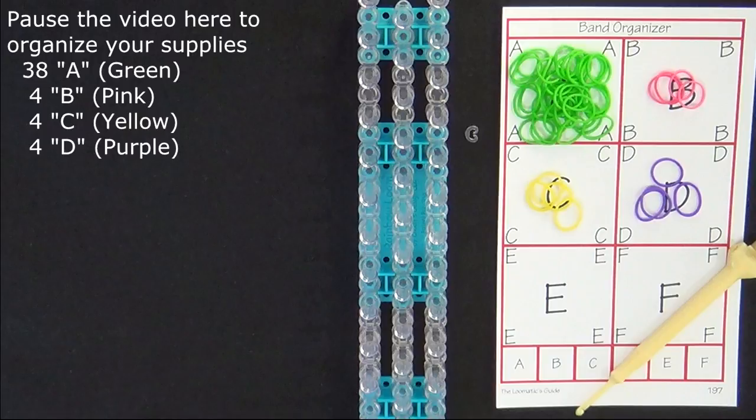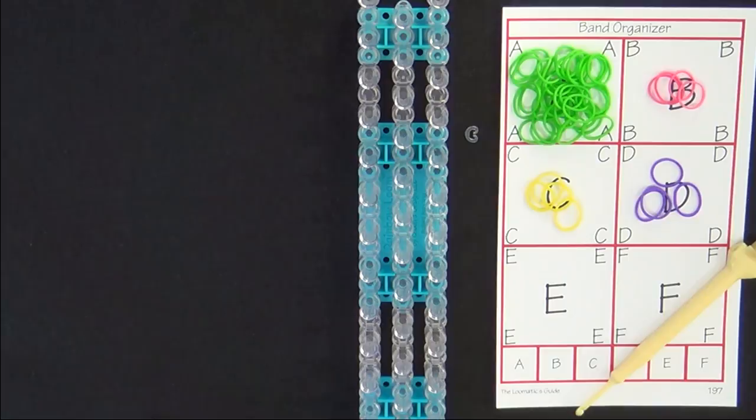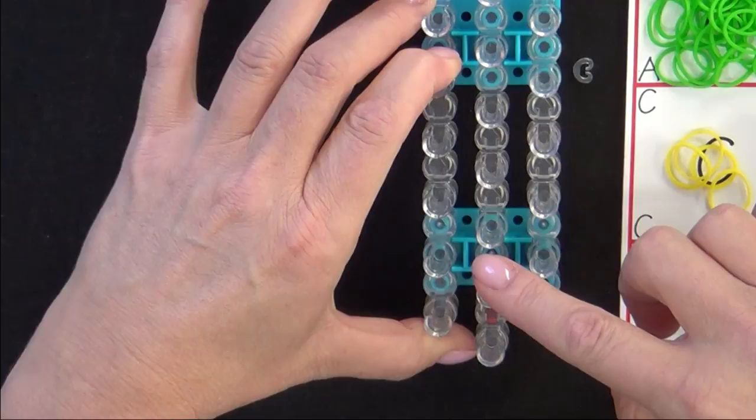It's a good idea to have your supplies ready before you begin, so pause the video here until you're ready to follow along. Now let's get started. Turn your loom so that the red arrow is pointing away from you.